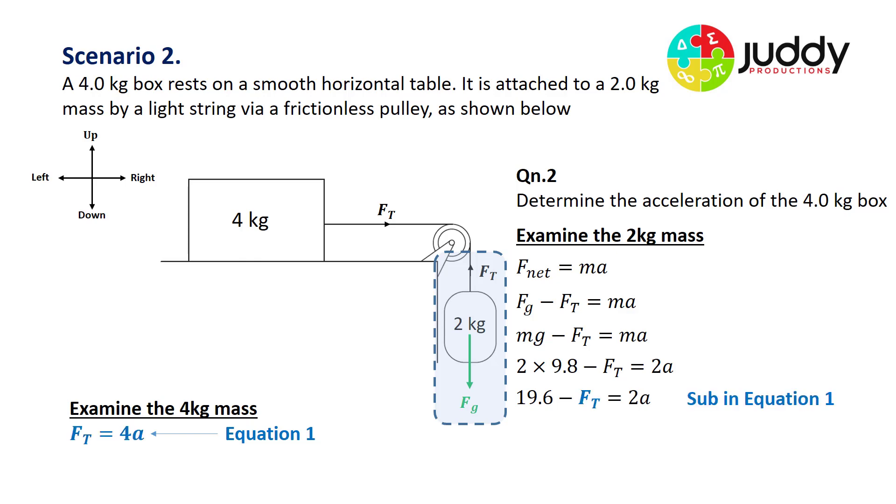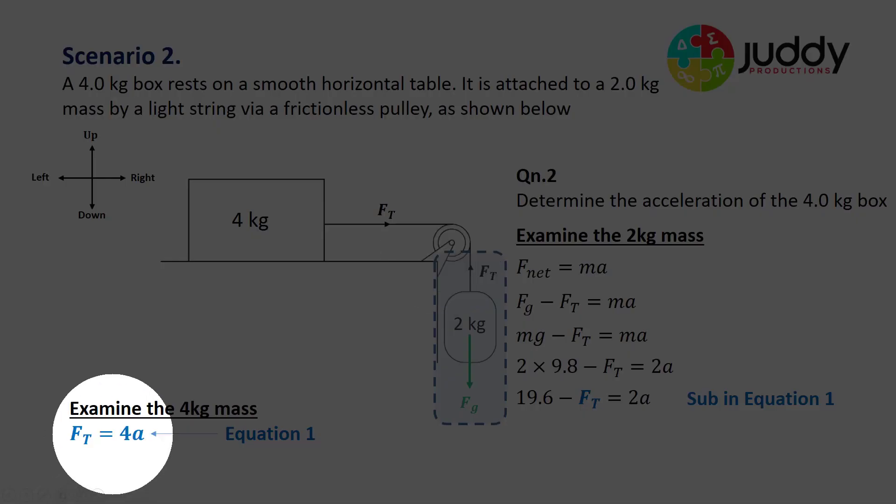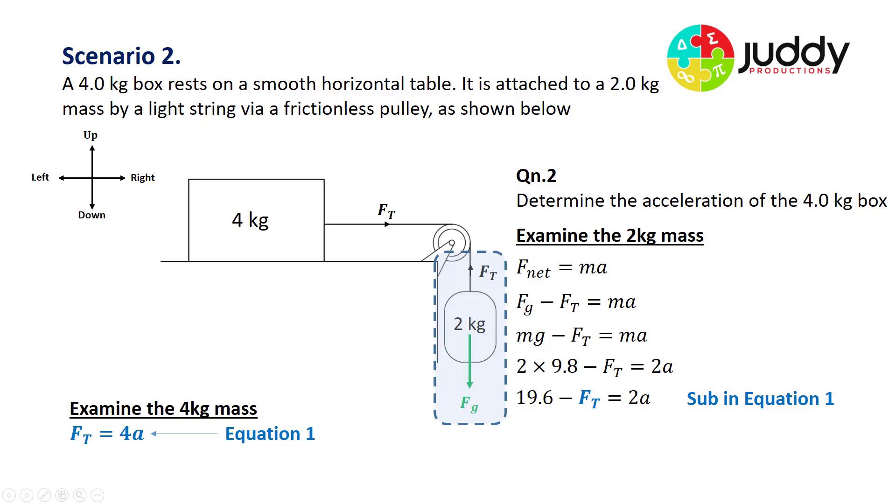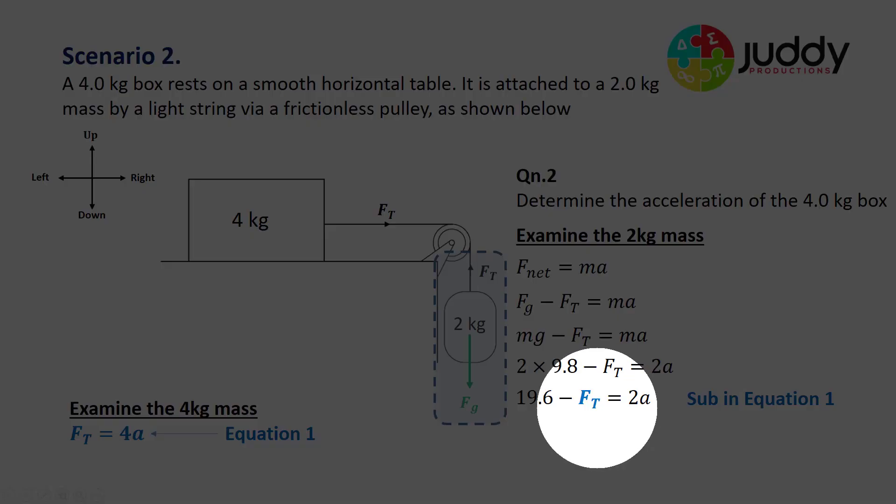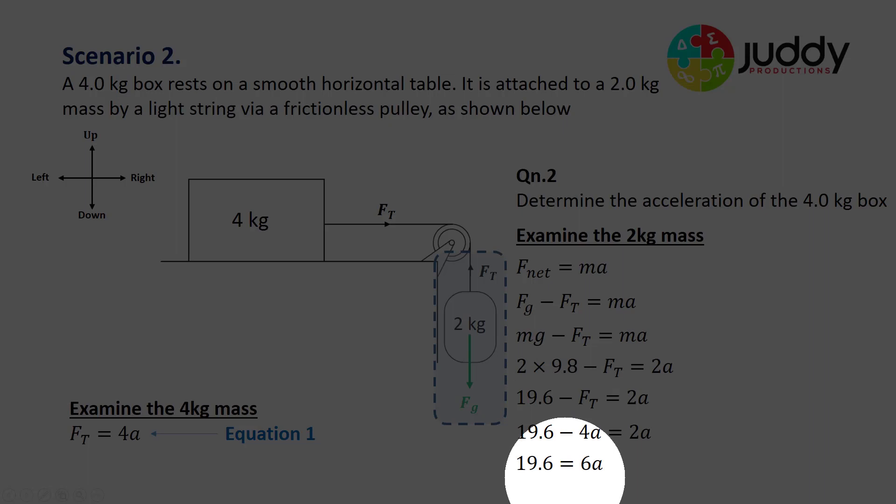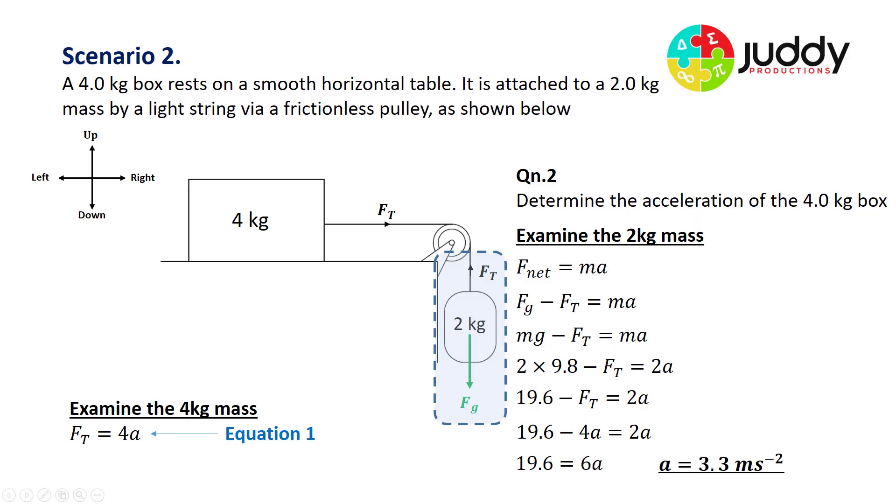We'll recall from equation one that Ft equals 4a. The tension of the horizontal string equals the tension of the vertical string, so we can substitute 4a for Ft. We now have 19.6 take 4a equals 2a. Grouping like terms and moving the a's to the right tells us that the acceleration of this system will be 3.3 meters per second per second.